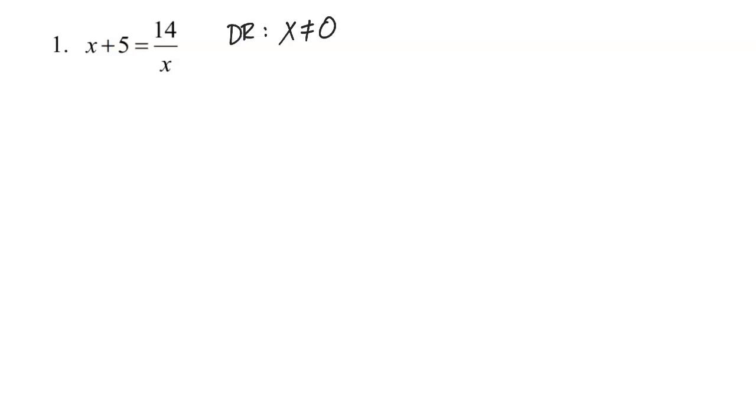Now, what am I going to do to get rid of that denominator? I'm going to multiply by it, and I've got to multiply the entire equation by it. So I'm going to multiply everything by x. x times x is going to give me x squared. 5 times x is going to give me plus 5x. That's going to equal 14 divided by x multiplied by x. That means the x's are just going to cancel and give me 14.